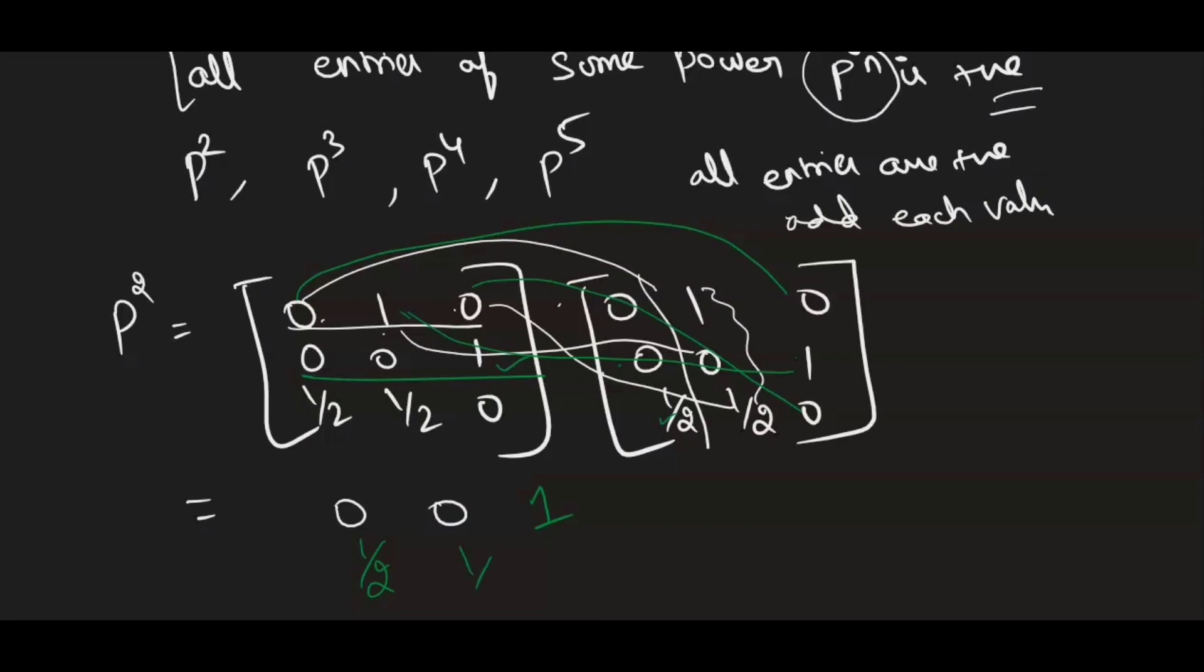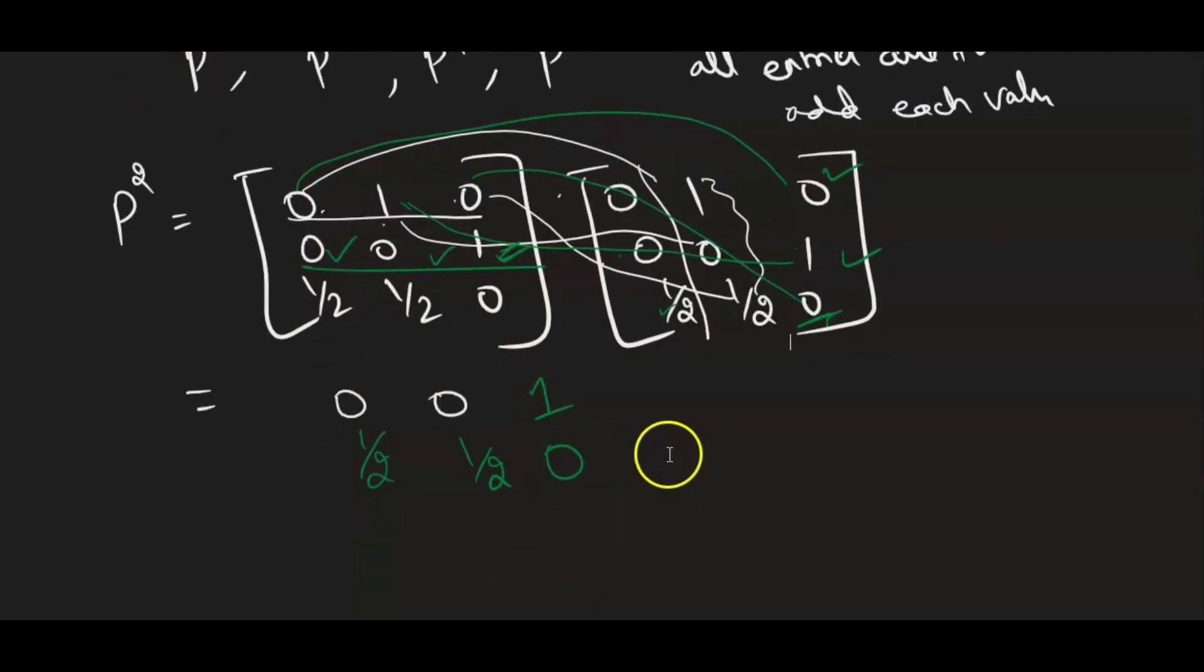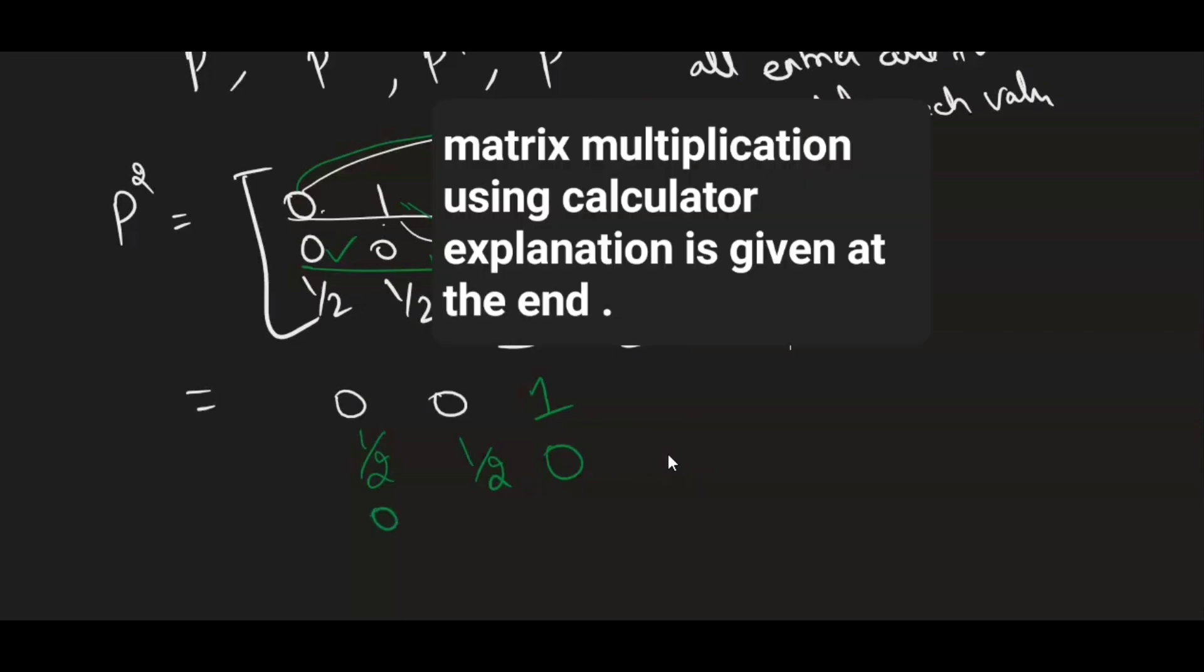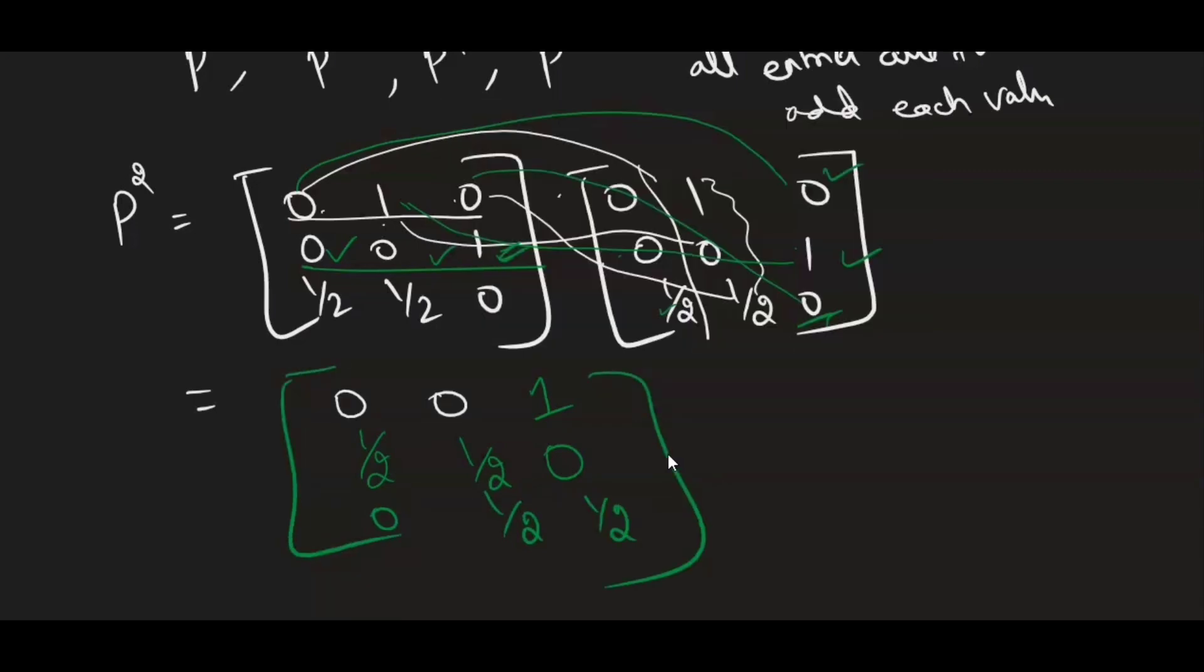And then same way, second value also 1/2. Third value 0 because 0×0 is 0, 0×1 is 0, 1×0 is again 0. If you want, you can do matrix multiplication for a few terms but better to use the calculator. And then last value, 1/2, 1/2. So this is your P².